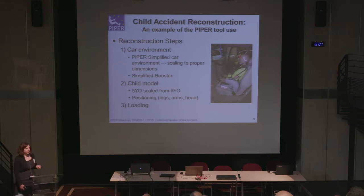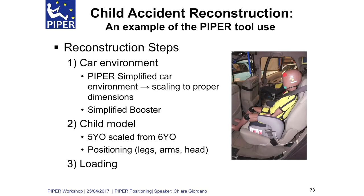We also had to adapt the child model. Our baseline is six years old, but we have a five-year-old here, so we are going to scale the model from six to five years old. Then we are going to position the model — legs, arms, and head. We target the position of the dummy because we would like to compare results from the dummies and our HBM. Finally, we are going to do the loading and the simulation.